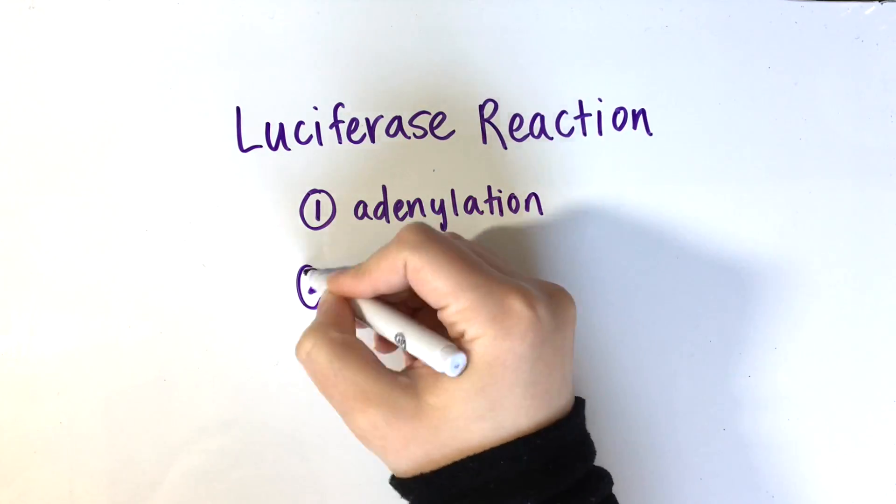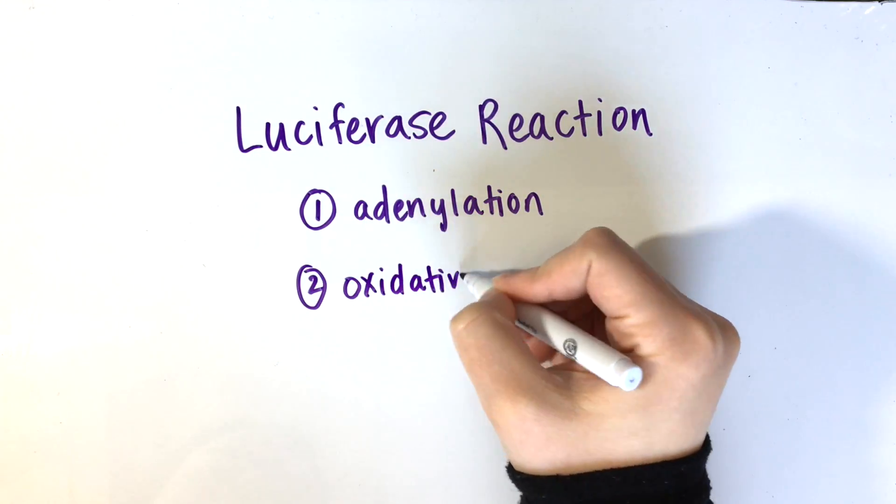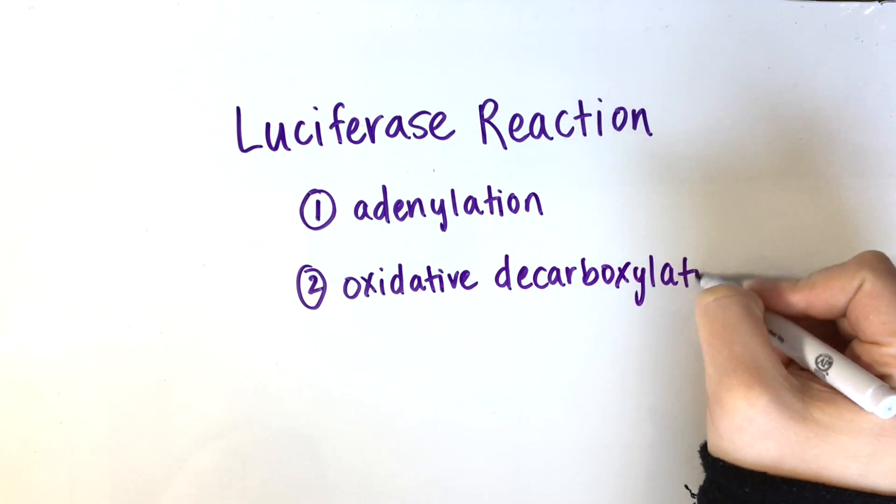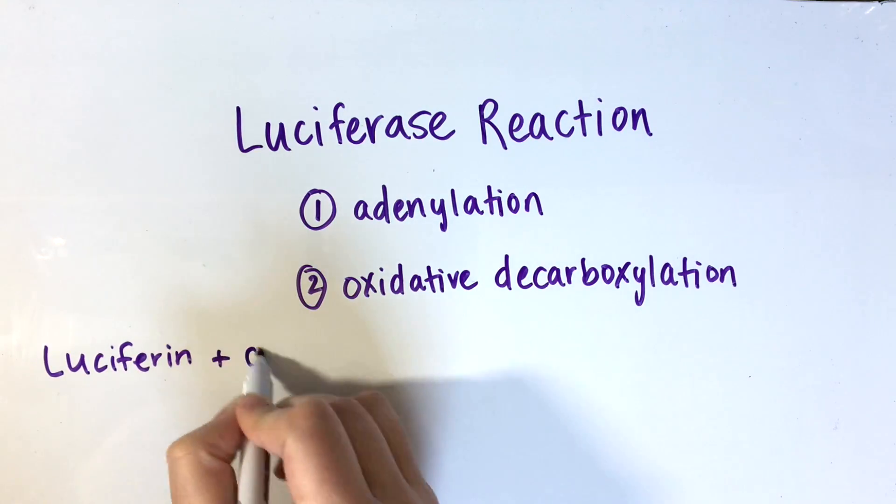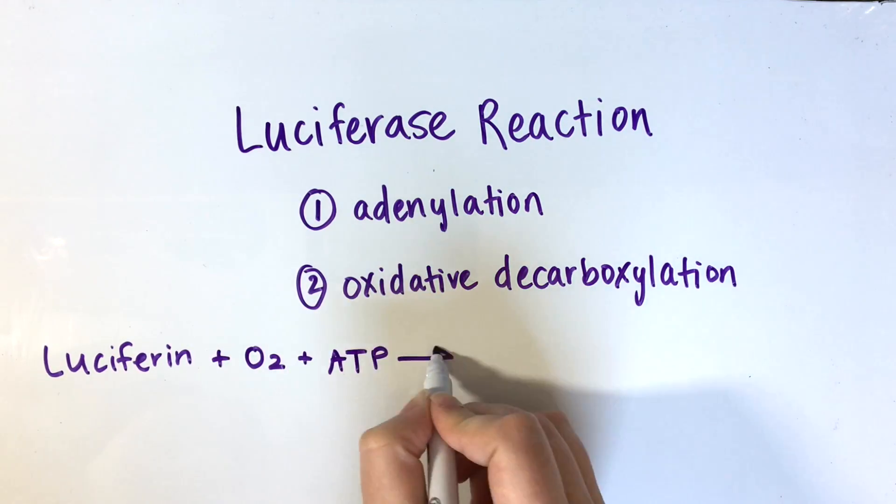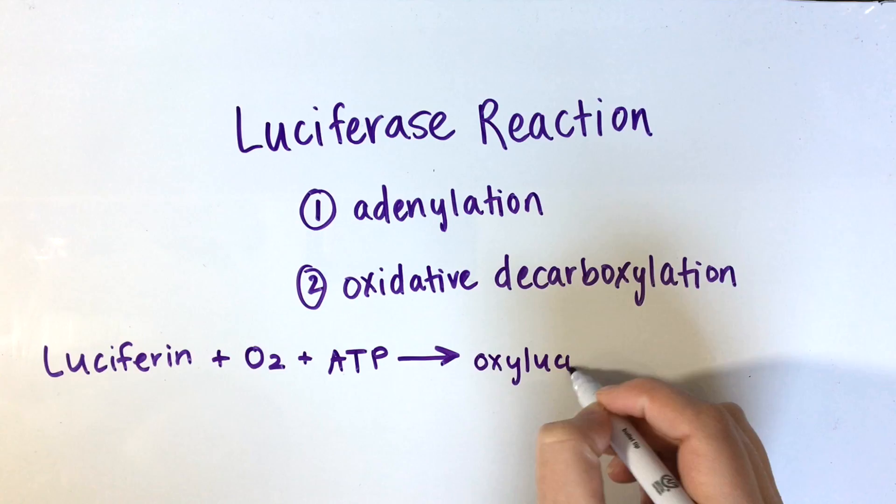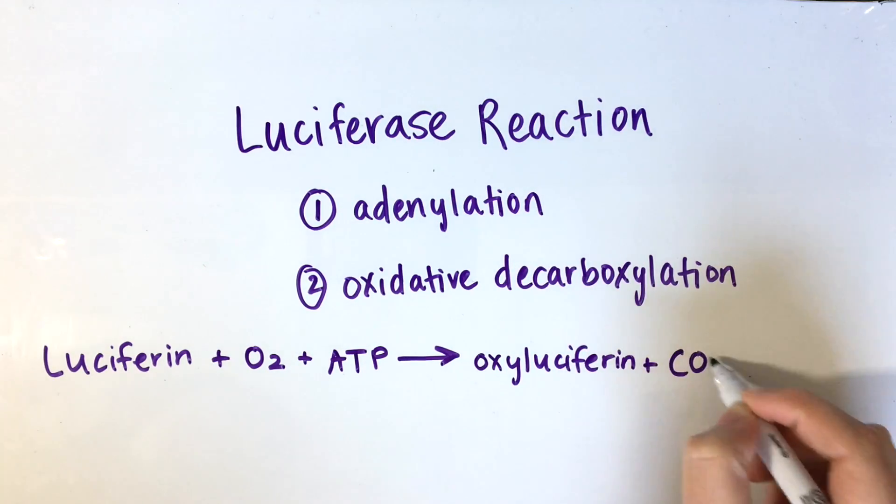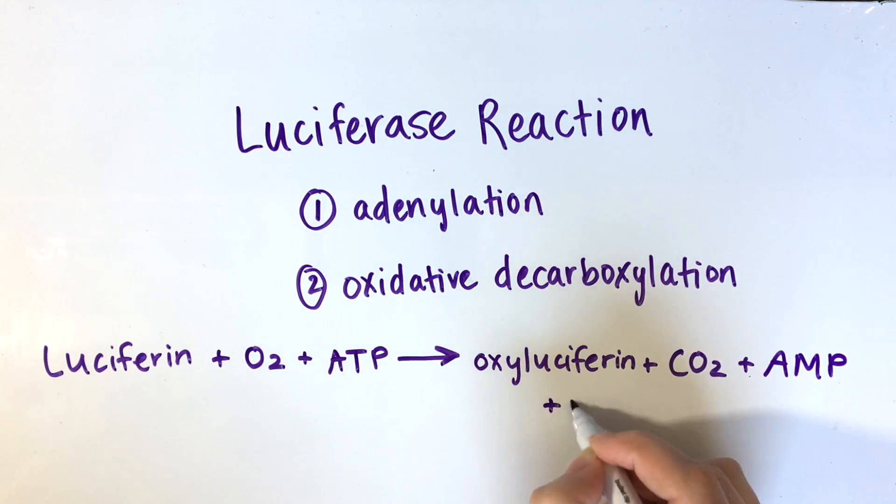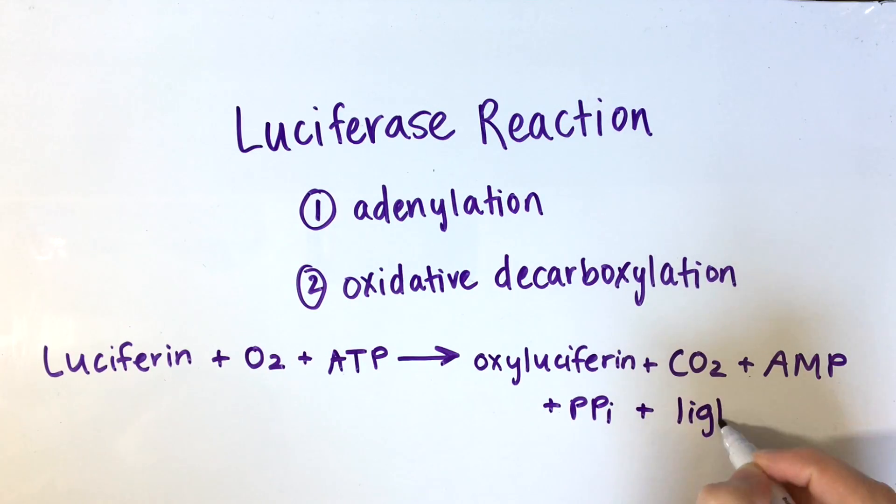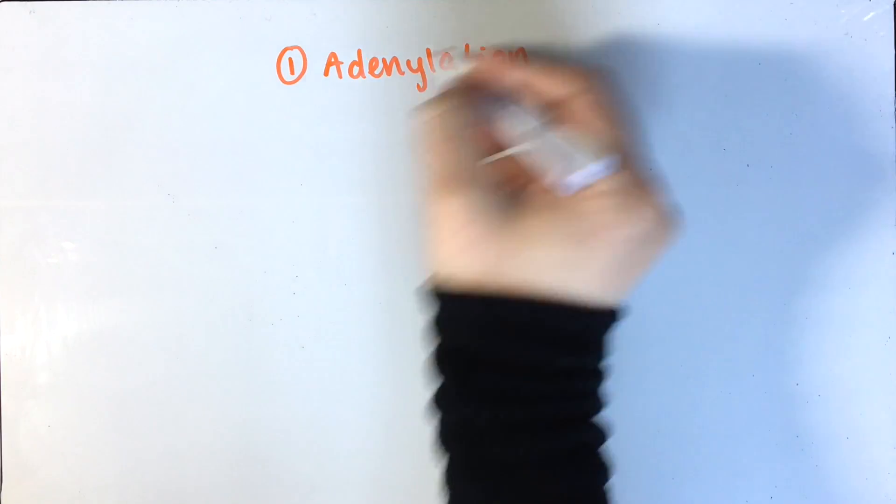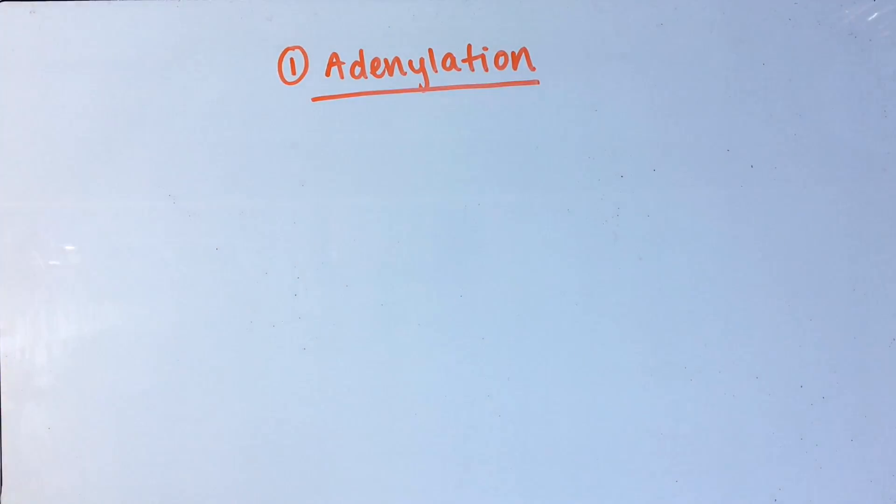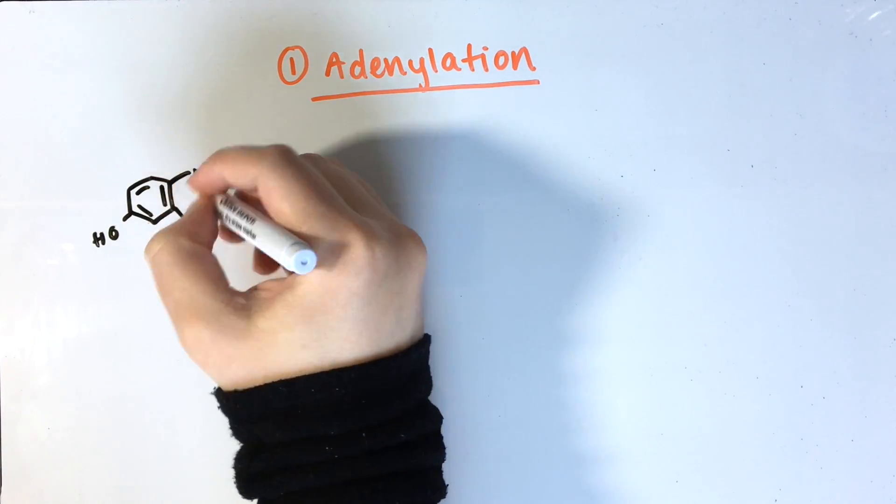The reaction of luciferase takes place in two general steps. First is the adenylation of luciferin using ATP, and second is an oxidative decarboxylation of the luciferyl adenylate to form an electronically excited oxyluciferin. When the excited oxyluciferin moves back to the ground state, energy is released in the form of light.